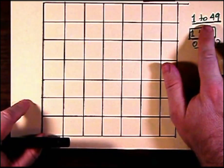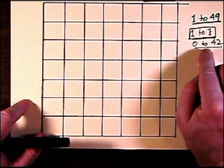We're going to do three squares: 1 to 49, 1 to 7, and 0 to 42.